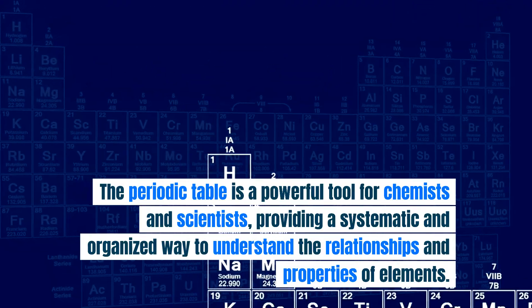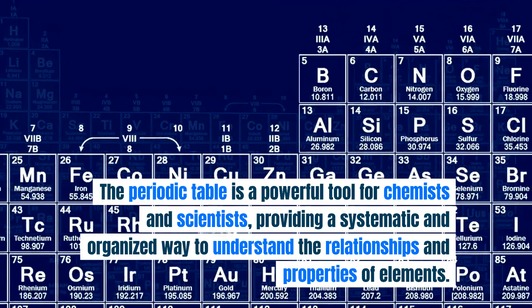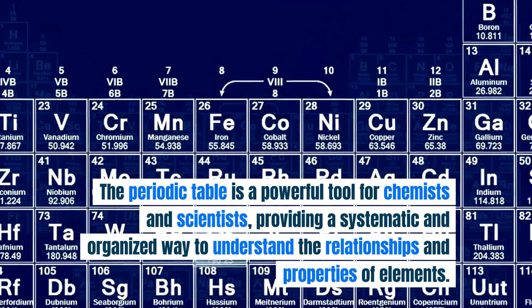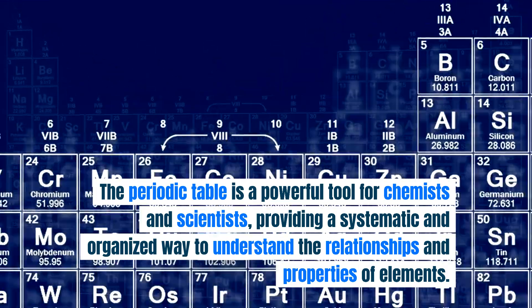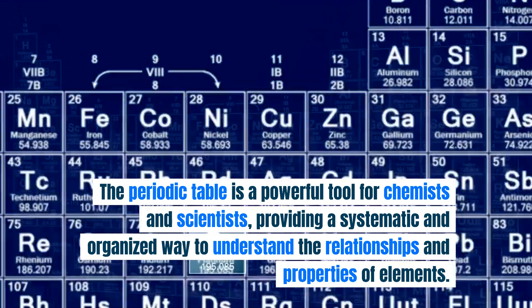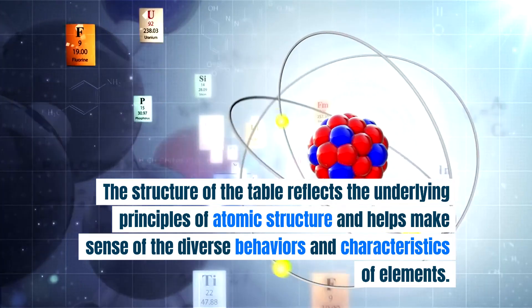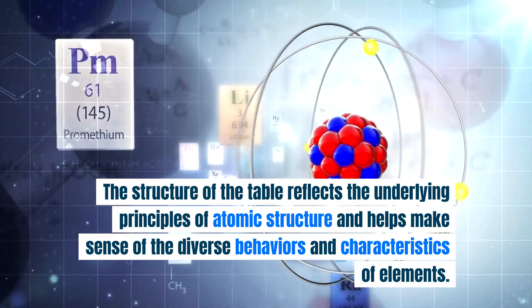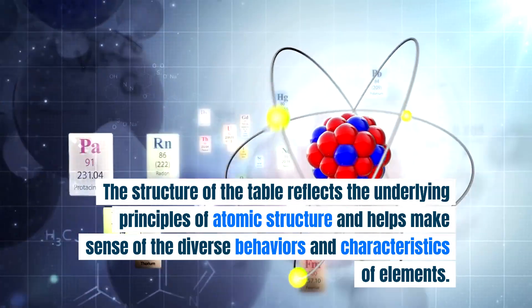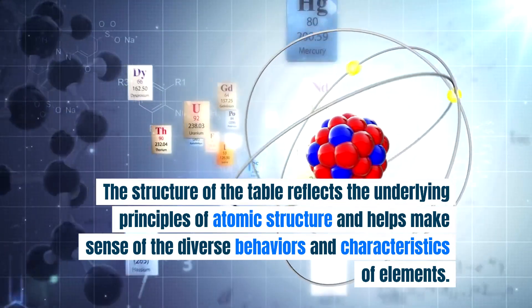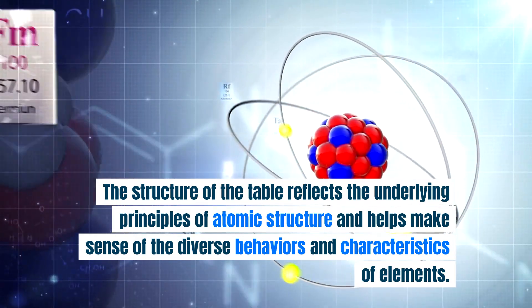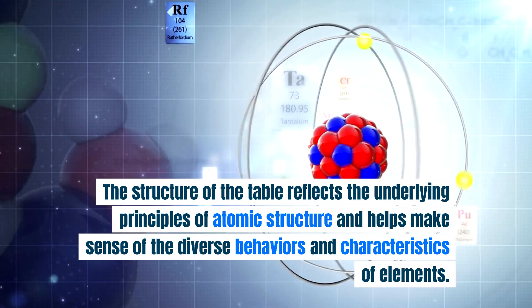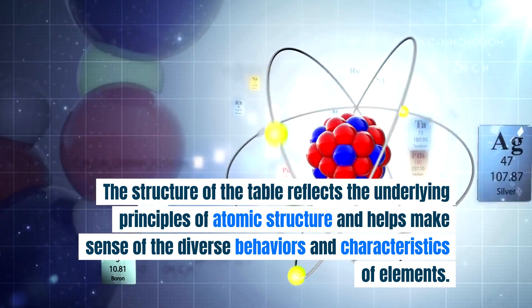The periodic table is a powerful tool for chemists and scientists, providing a systematic and organized way to understand the relationships and properties of elements. The structure of the table reflects the underlying principles of atomic structure and helps make sense of the diverse behaviors and characteristics of elements.